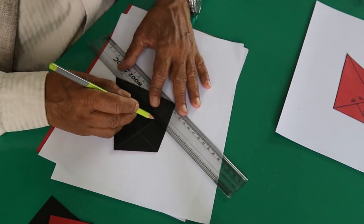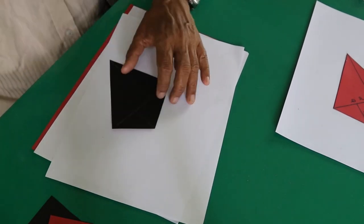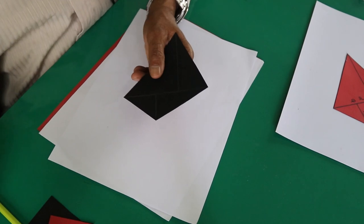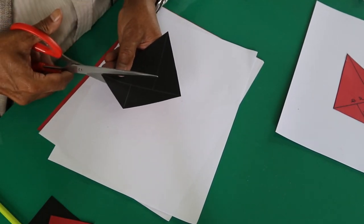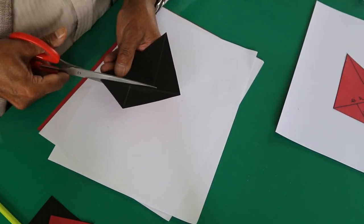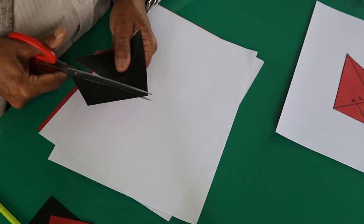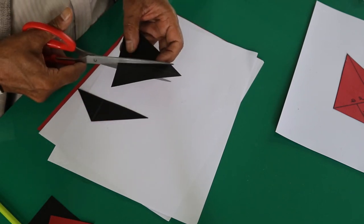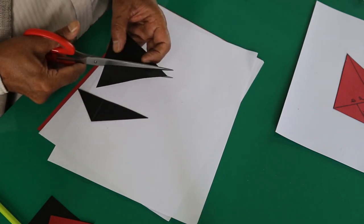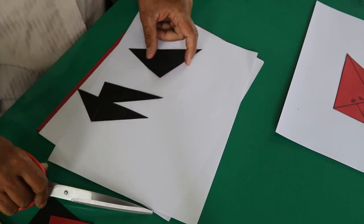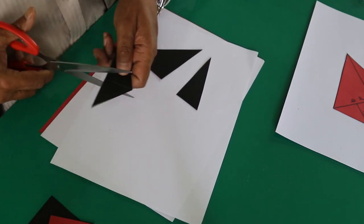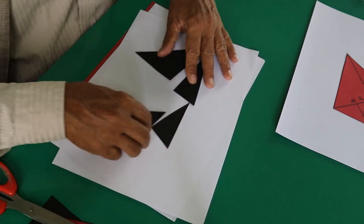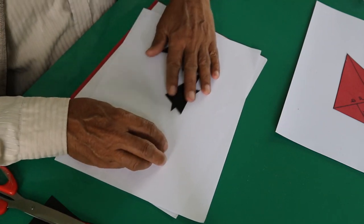You have now the offset and the diagonal on the quadrilateral ABCD. Now cut this into four pieces. You have four different triangles, right angle triangles of different shapes. Keep them here.